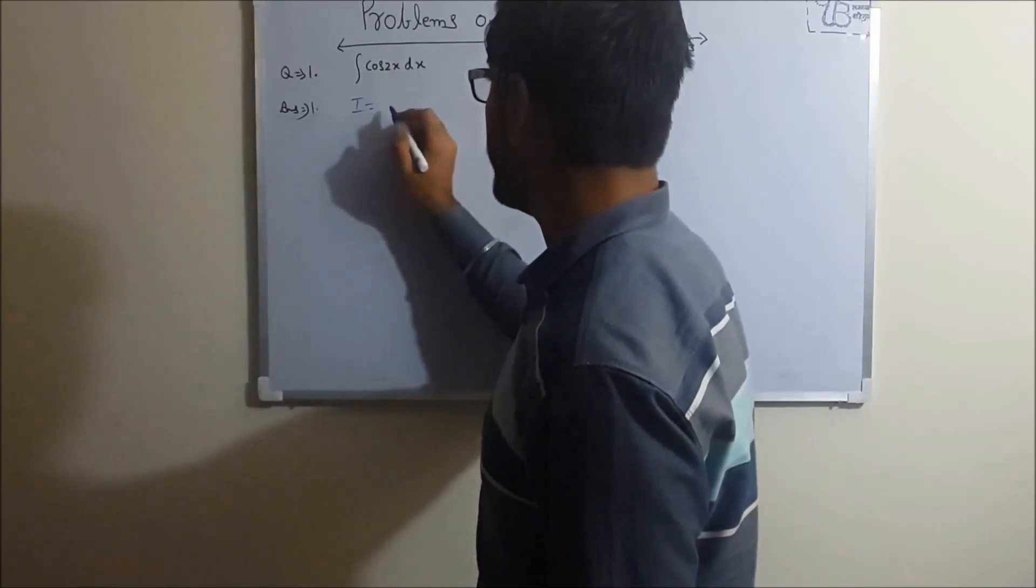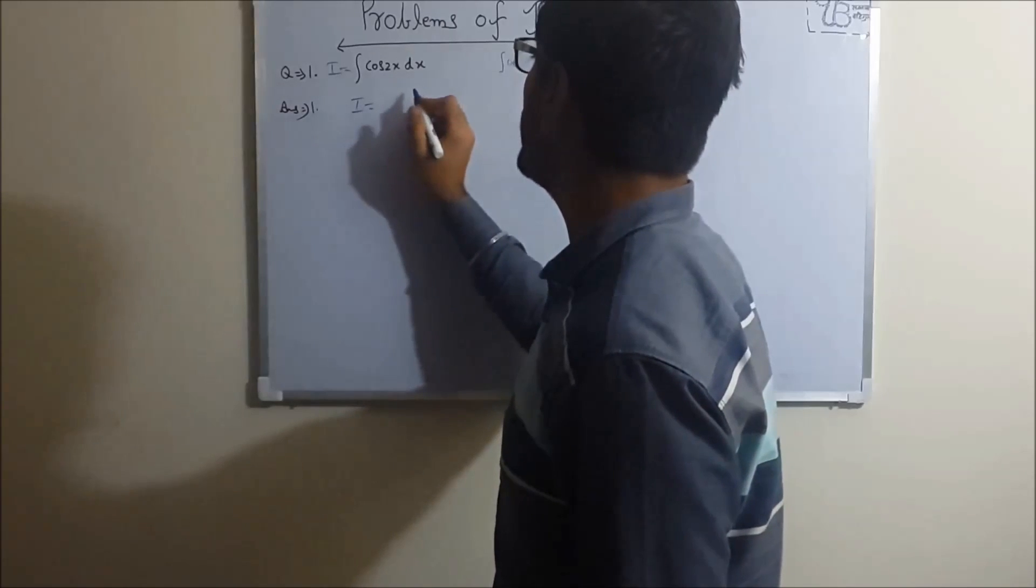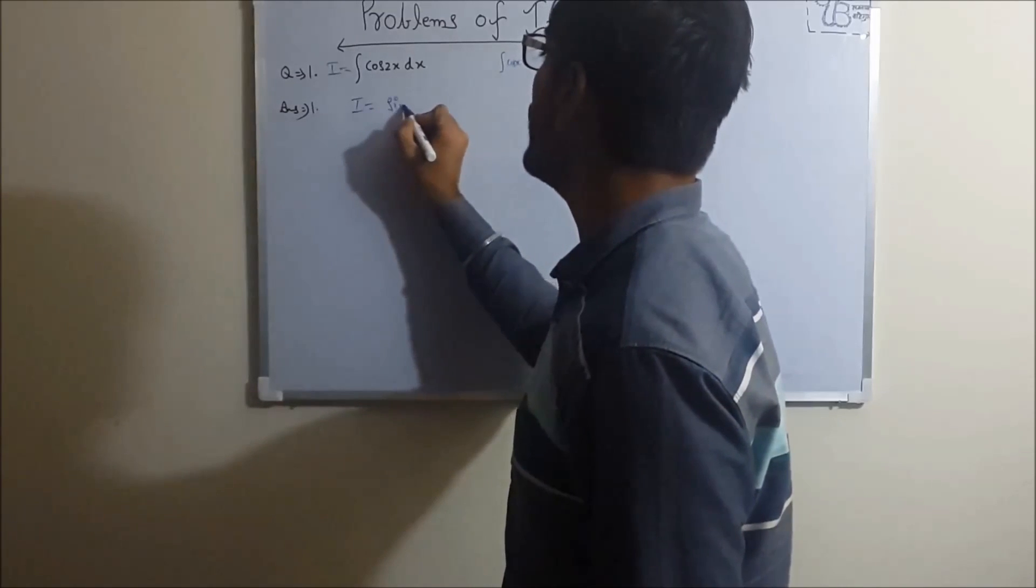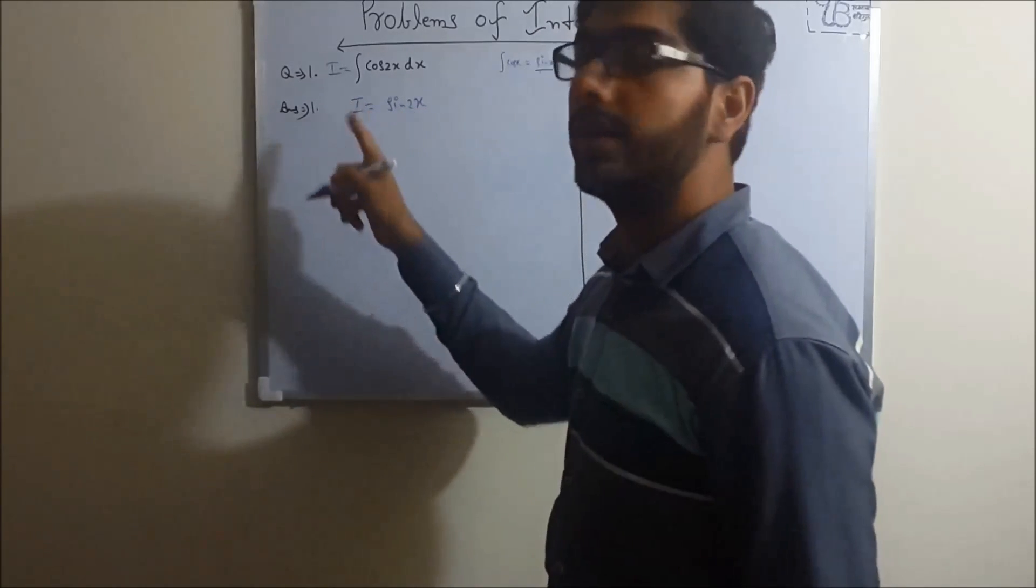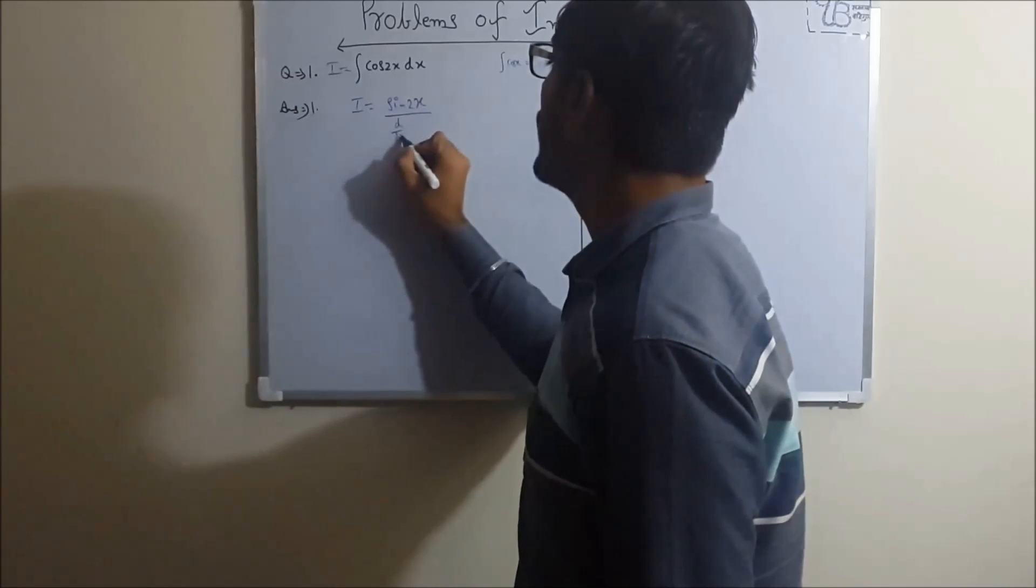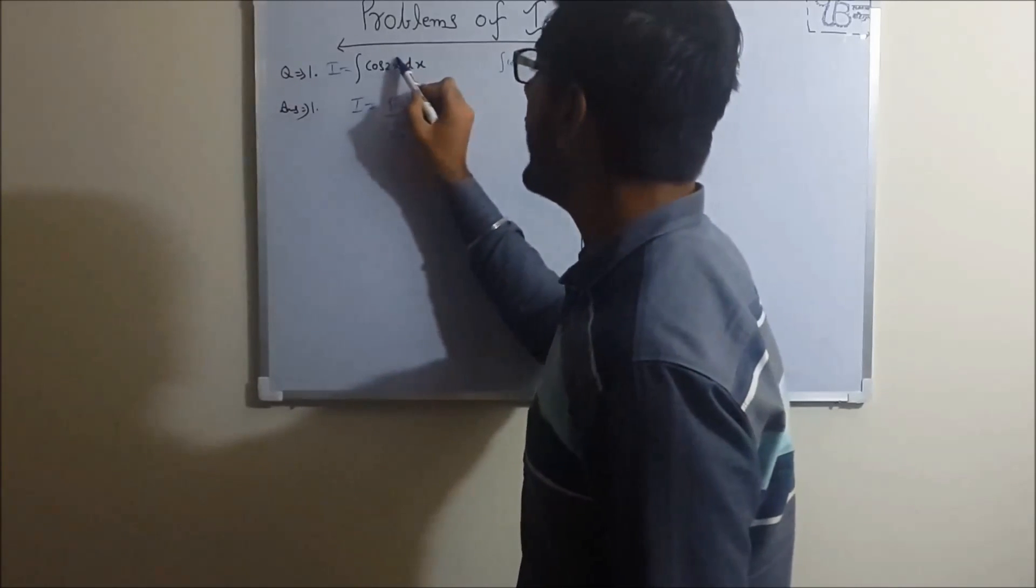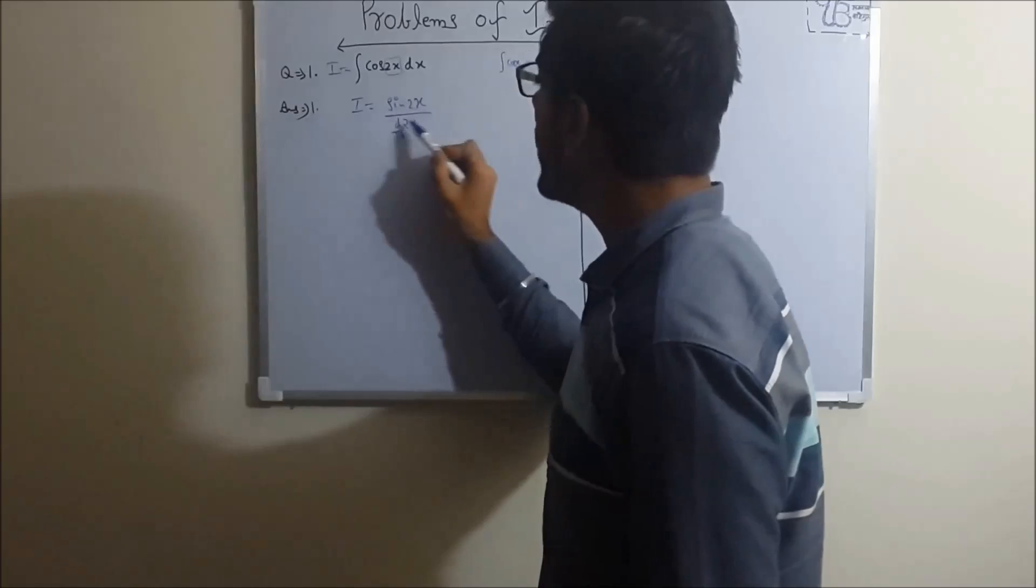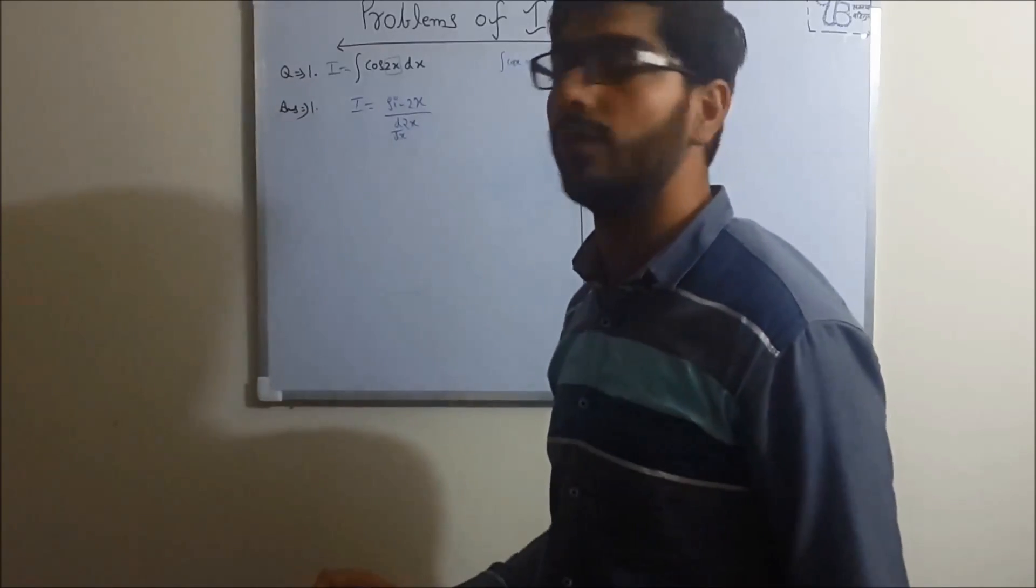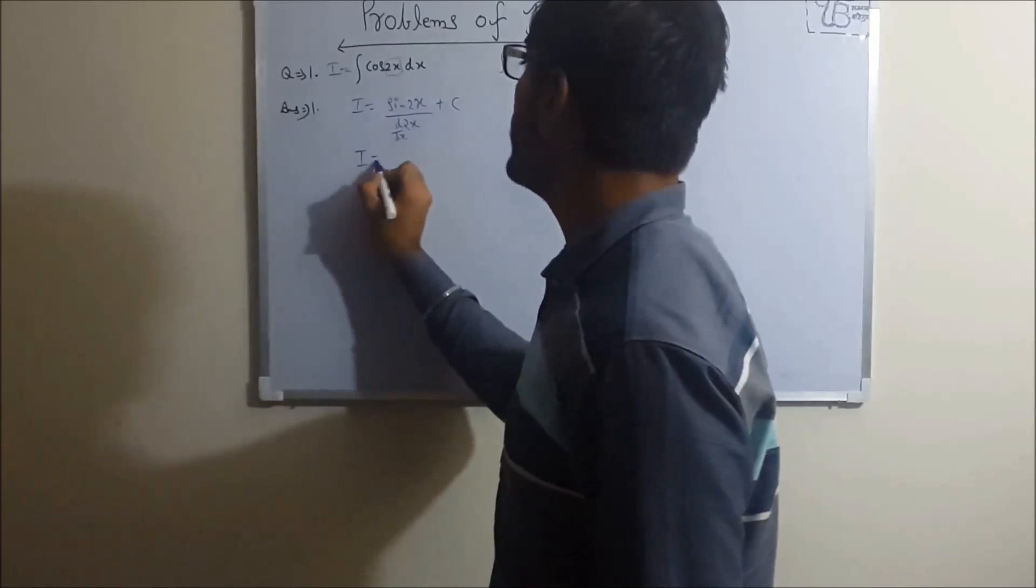So integration of cos 2x - what can we write friends? This is I, so I equals integration of cos 2x, which will be friends sin of 2x. Sin of 2x divided by the derivative of 2x. Now friends, I showed you here, the derivative of x - whatever the coefficient of x is, we divide by the derivative of that coefficient.